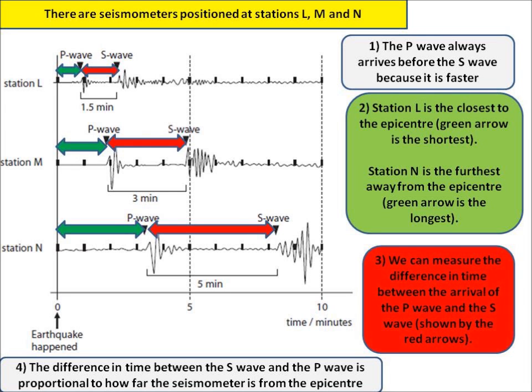In this example we have three seismometers and they're positioned at stations L, M, and N, and we've got three seismographs which we can look at and compare.